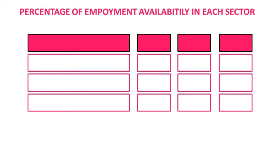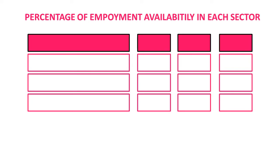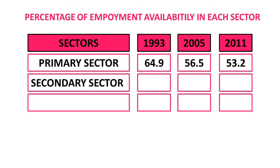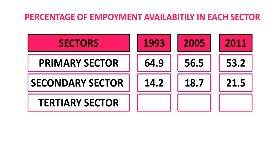Percentage of employment availability in each sector across years 1993, 2005, and 2011: In the primary sector — 64.9% in 1993, 56.5% in 2005, and 53.2% in 2011. In the secondary sector — 14.2% in 1993, 18.7% in 2005, and 21.5% in 2011. In the tertiary sector — 20.9% in 1993, 24.8% in 2005, and 25.3% in 2011.